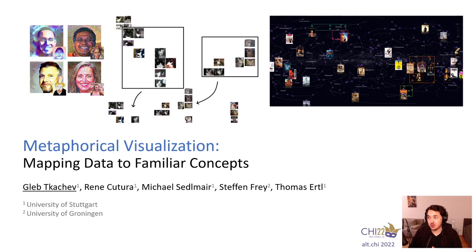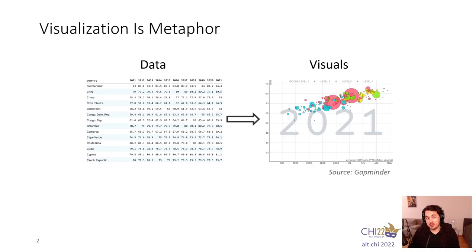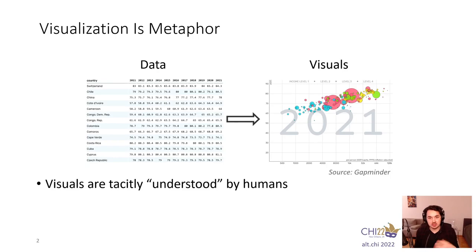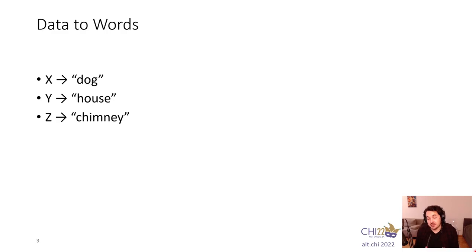Welcome to Metaphorical Visualization, a paper about mapping from data to anything like cat images or stars in the sky. The idea comes from seeing visualization as a form of metaphor from data to visuals. This works well because we as humans tacitly understand visual primitives — I don't have to explain how a large circle is larger than a small circle. And can we push this further? Can we map to something beyond the visual? We think that we can.